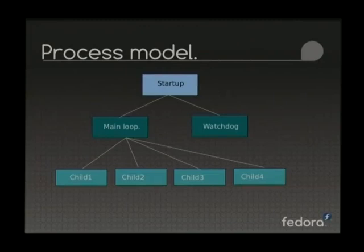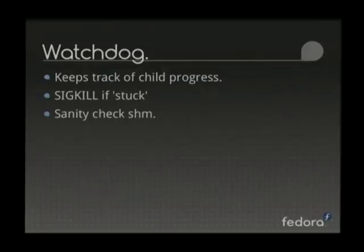There's a shared memory map between all the children. You run the tool, it forks a main loop and a watchdog process. The main loop just keeps forking however many children as you have processors, and if one of these dies, it respawns another one — continually spawning children as necessary. This tends to happen because sometimes the children segfault when they call certain system calls that are just too crazy. The watchdog process keeps track of all the children and will send a SIGKILL if a system call is stuck, like stuck in a read. It does basic sanity checks on the shared memory map to make sure none of them are corrupting it.